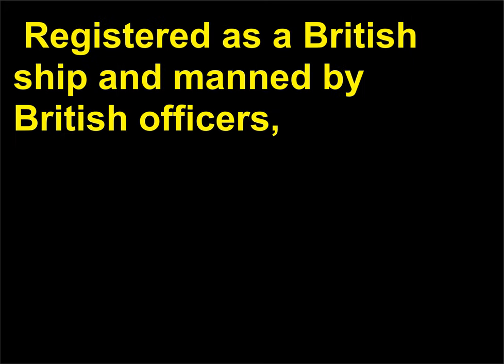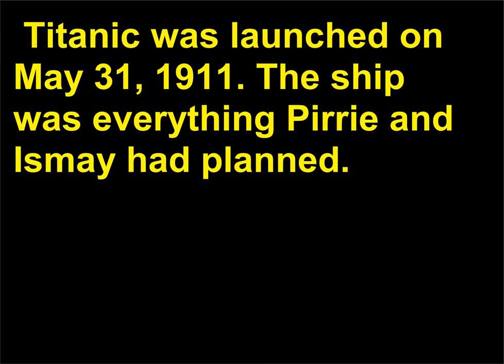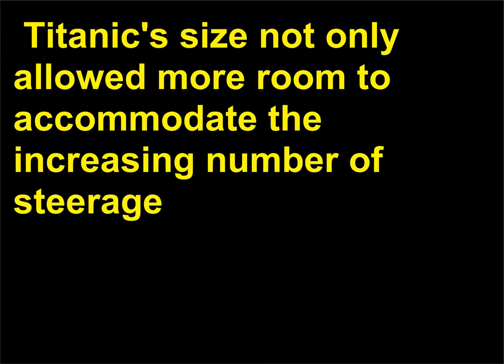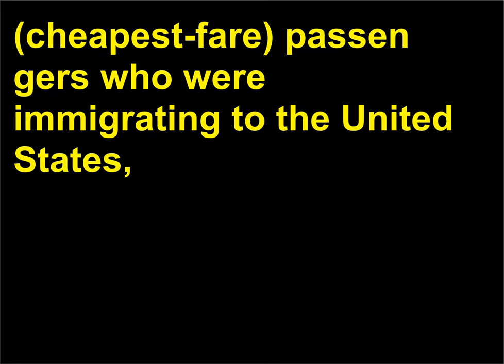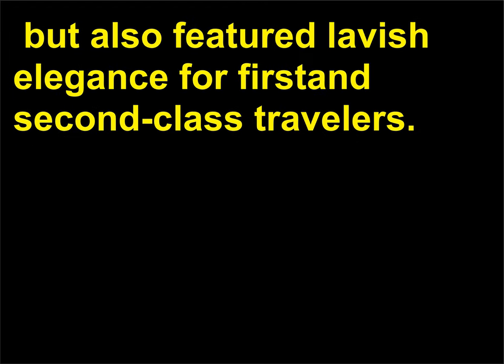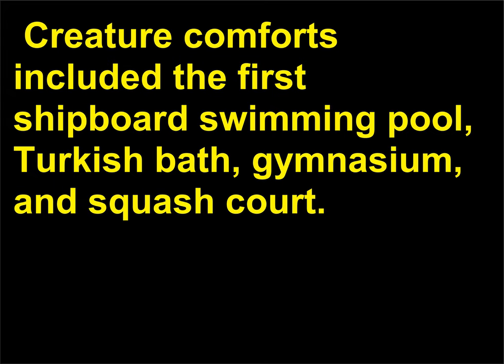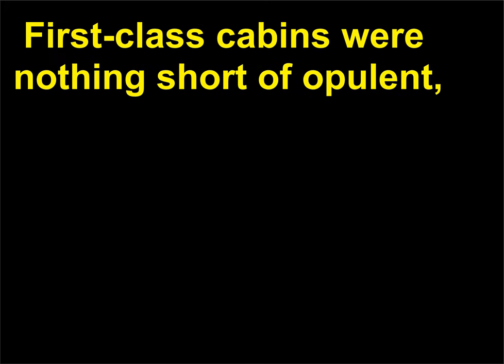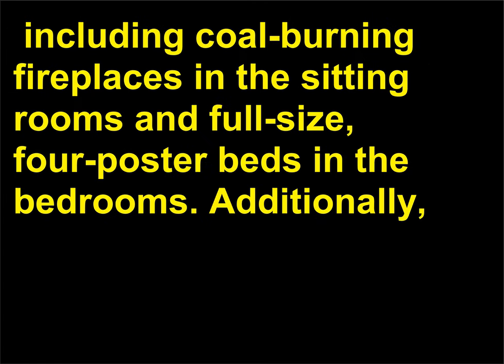Registered as a British ship and manned by British officers, Titanic was launched on May 31, 1911. The ship was everything Pirrie and Ismay had planned. Titanic's size not only allowed more room to accommodate the increasing number of steerage — cheapest fare — passengers who were immigrating to the United States, but also featured lavish elegance for first- and second-class travelers. Creature comforts included the first shipboard swimming pool, Turkish bath, gymnasium, and squash court. First-class cabins were nothing short of opulent, including coal-burning fireplaces in the sitting rooms and full-size four-poster beds in the bedrooms.